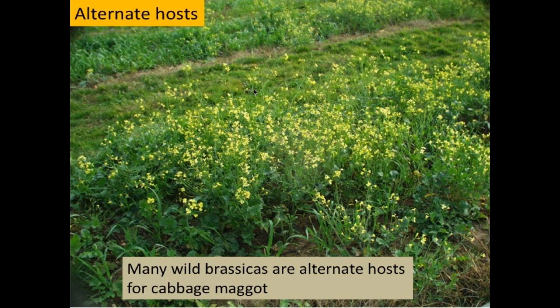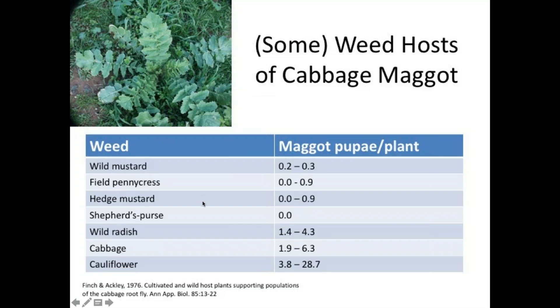There are some alternate hosts of cabbage maggot that grow in and around commercial agricultural fields. Some of them are wild brassica plants such as wild mustard, field pennycress, hedge mustard, shepherd's purse, and wild radish. If you see this chart, cultivated brassicas like cabbage and cauliflower are most attractive — the maggot pupae per plant numbers are very high for cabbage and cauliflower compared to alternate hosts. So once you put the transplant in the main field, the party starts there.